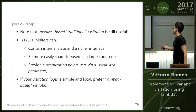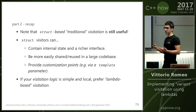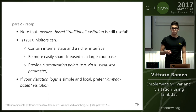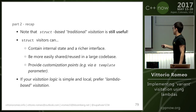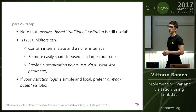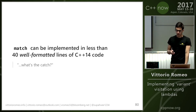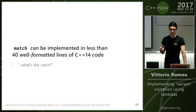My guideline: if your visitation logic is simple and local, use lambda-based visitation. But if you need something more powerful or that needs to be reused, then use a traditional struct and pay the price for some syntactical overhead. match can be implemented in less than 40 well-formatted lines of C++14 code, even less in C++17. What's the catch? The catch depends on recursive variants.